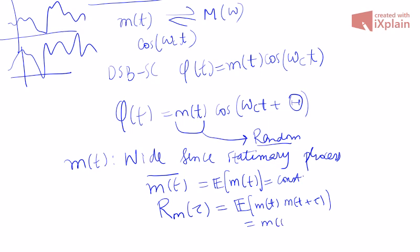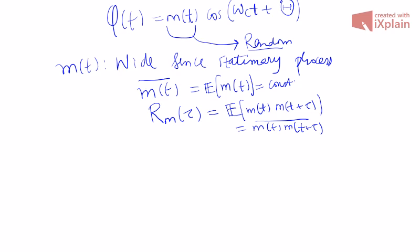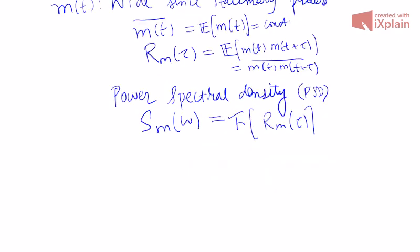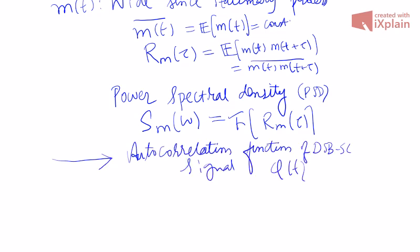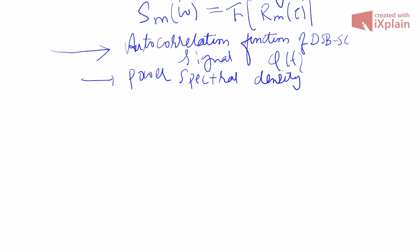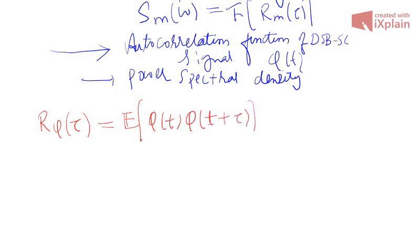The autocorrelation function R_M of tau depends only on the time difference, written as the expected value of M(T) * M(T + tau), or as the book writes, M(T) * M(T + tau) with a bar. Correspondingly it will have some power spectral density S_M of omega, which is the Fourier transform of R_M of tau. Now we need to find two things: one is the autocorrelation function of DSBSC and its corresponding power spectral density. We will first proceed with the autocorrelation function, which we call R_phi of tau.